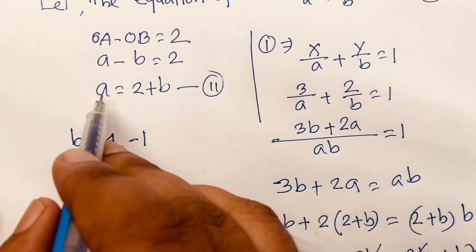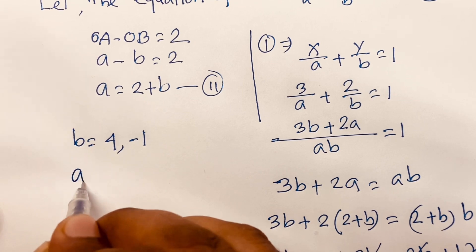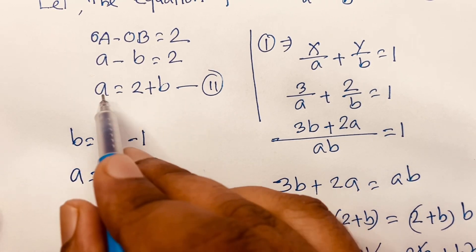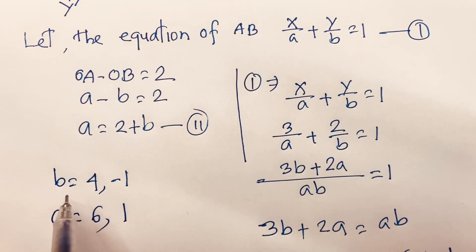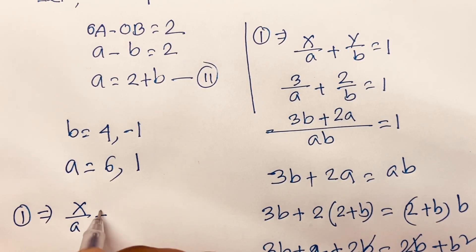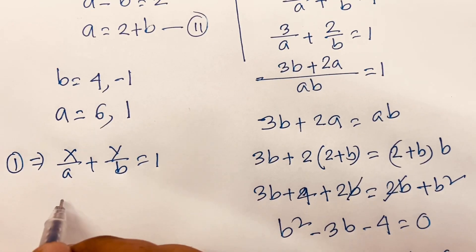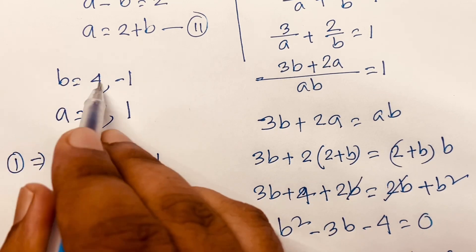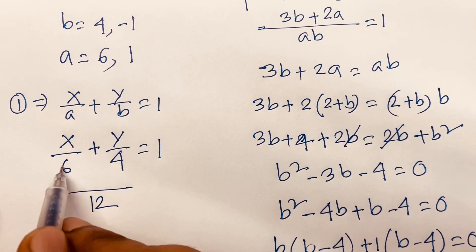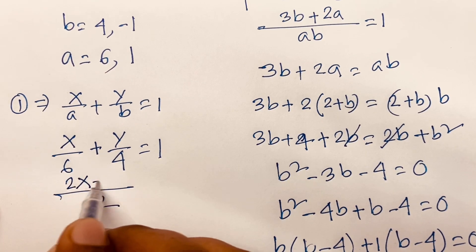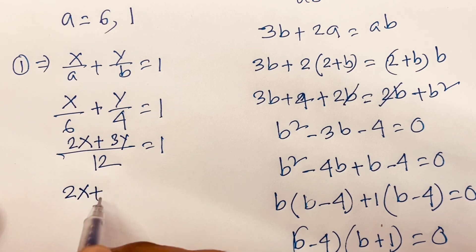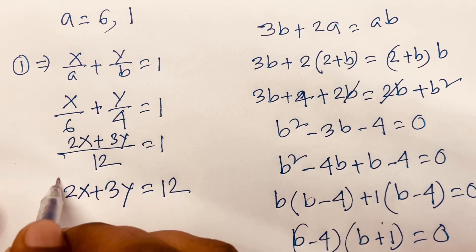Now we find the value of a using a = 2 + b. When b = 4, a = 6; and when b = -1, a = 1. For the first case, the equation is x/6 + y/4 = 1. Multiplying through by 12: 2x + 3y = 12. This is our first answer.